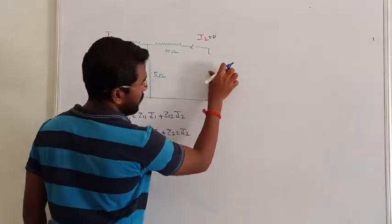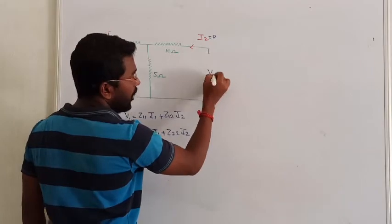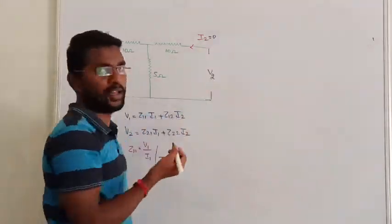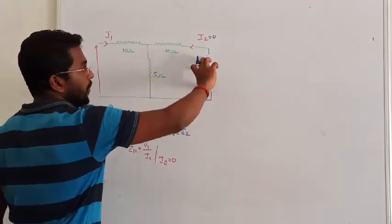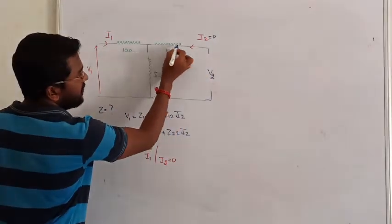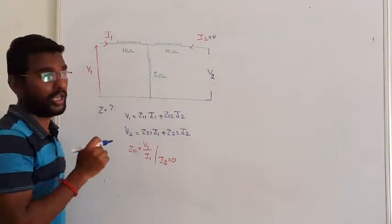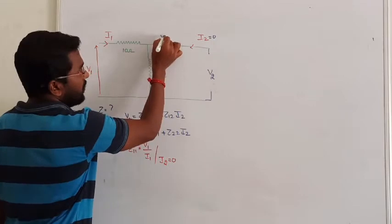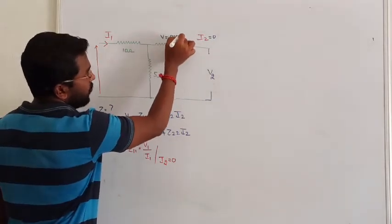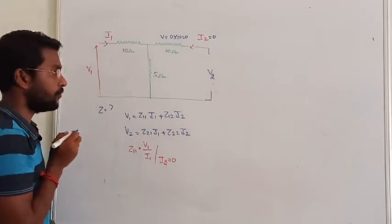Now let me ask you why I2 is 0. Since I2 is 0, from V = I·R, with R = 10 ohms, the voltage drop across that resistor is 0. So that resistance has no voltage drop.